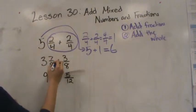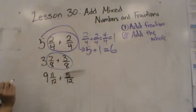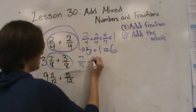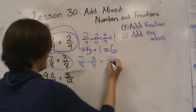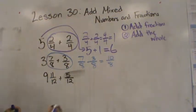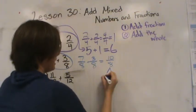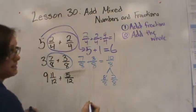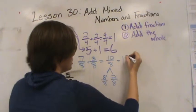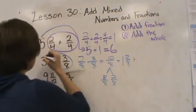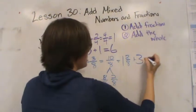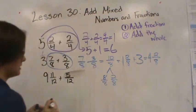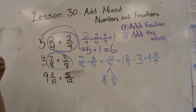Let's do another one: three and seven eighths plus three eighths. We look at the fractions first — seven eighths plus three eighths equals ten eighths, which is an improper fraction. We need to convert it: eight eighths and two eighths gets us ten eighths, which is the same as one and two eighths. Adding the three, we get four and two eighths.